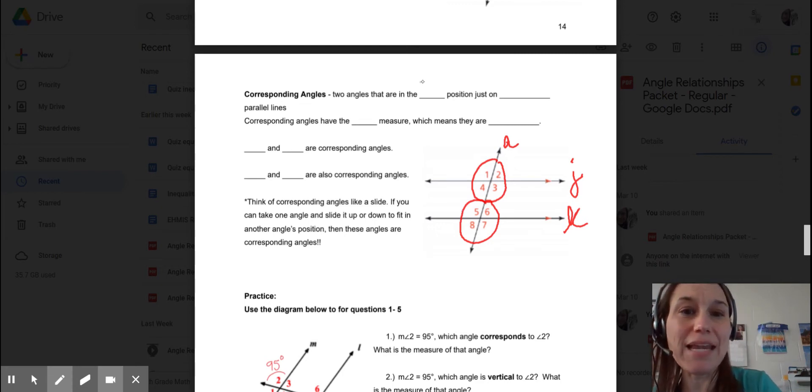So two angles that are in the same position just on different lines are called corresponding.